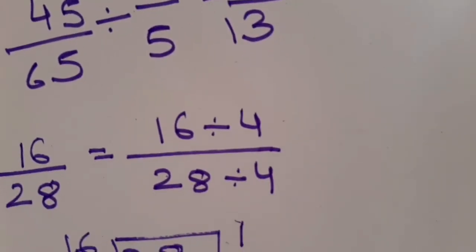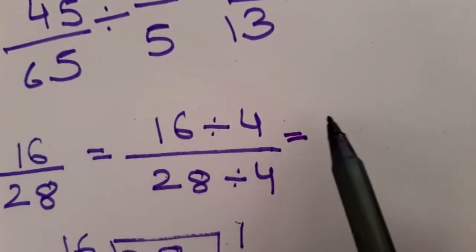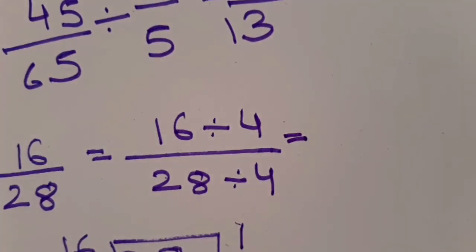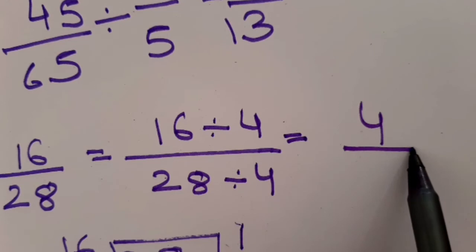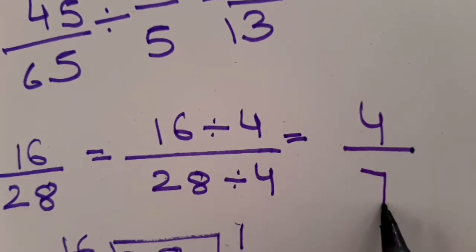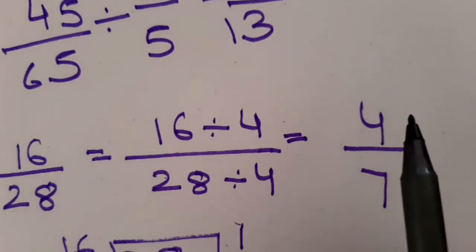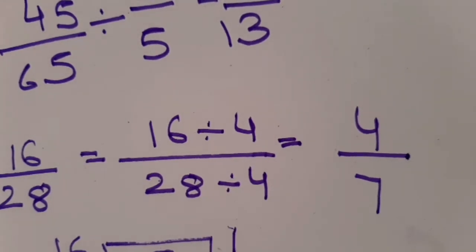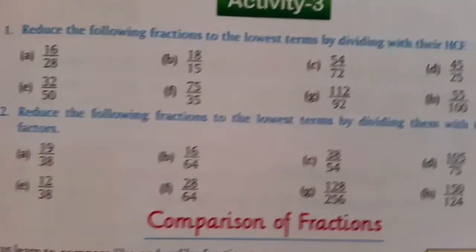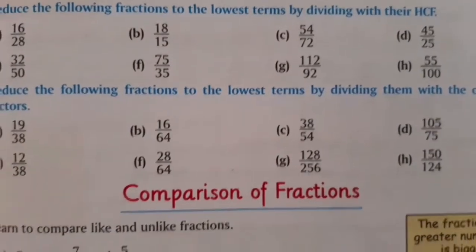I will divide both the numbers by 4. The answer is 16 divided by 4 is 4, and 28 divided by 4 is 7. So my answer is 4 upon 7. Likewise, you have to complete question number 1. It is very simple — just find out the HCF of the two numbers and divide both the numerator and denominator by that number. You will get the reduced term.